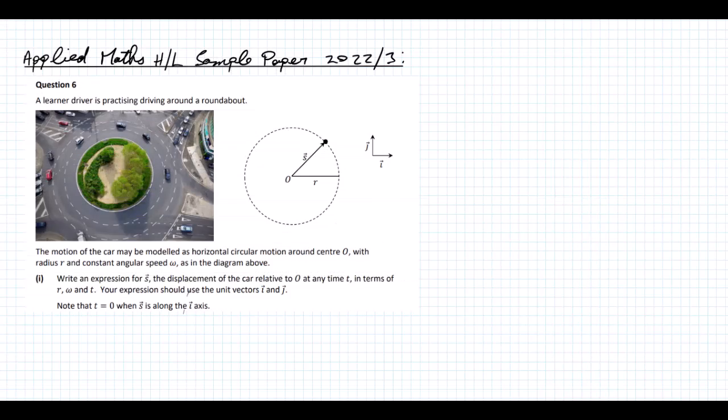Let's look at the applied maths higher level sample paper 2022-2023. A learner driver is practicing driving around a roundabout. The motion of the car may be modeled as horizontal circular motion center O with radius R and constant angular speed omega, as in the diagram above.